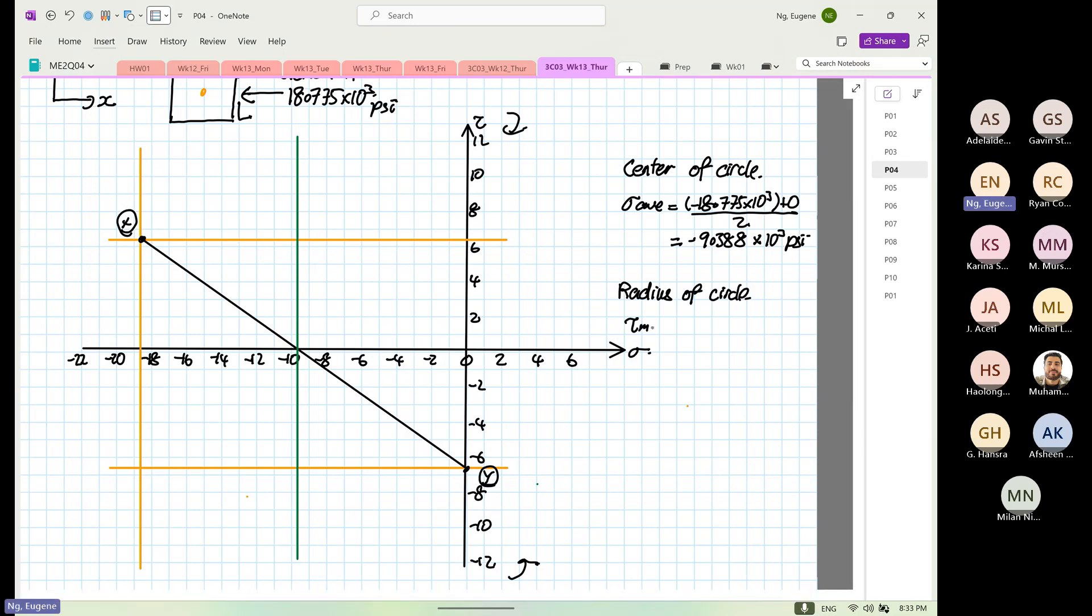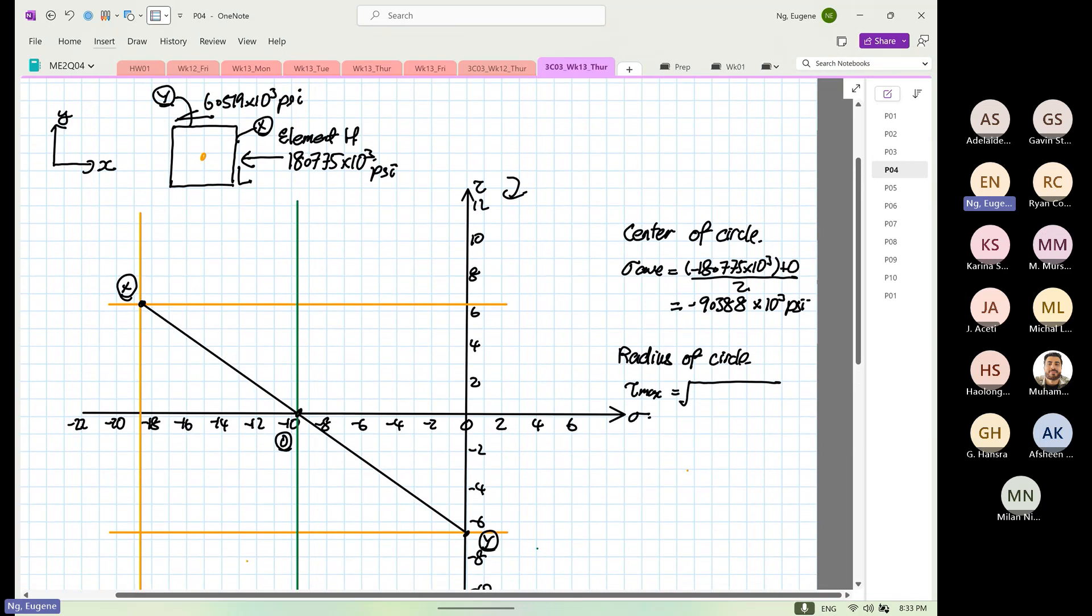So your tau max will be equal to, we label the center over here as 0.0. So this will be equal to your shear stress, which is 6.519, plus by 9.388 squared. So 6.519 plus by 9.388 squared, square root of them is 11.429 times 10 to the power 3 psi.